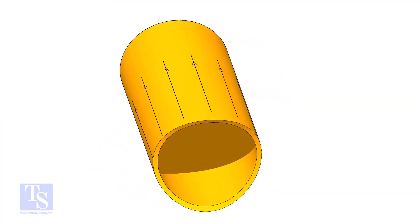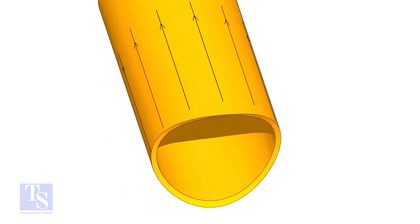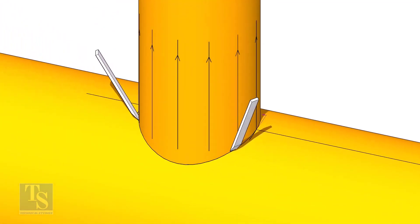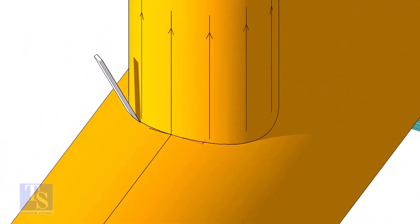After cutting and grinding the notch on the branch pipe, put it on the header. Make sure it is exactly in its position and mark the opening on the header as shown.